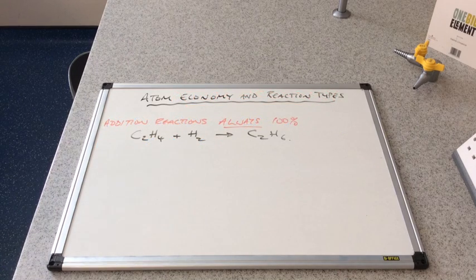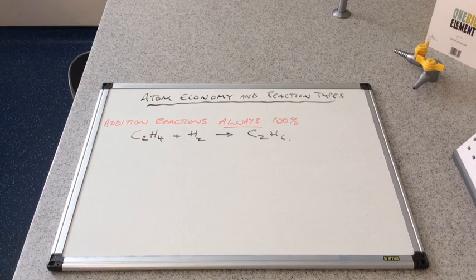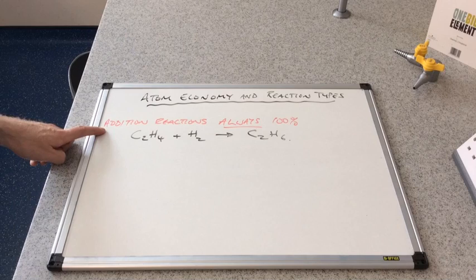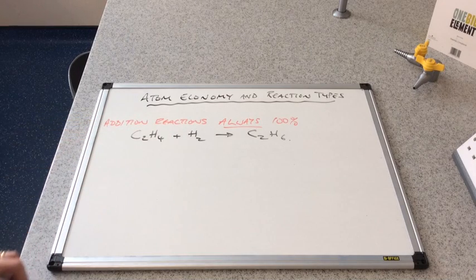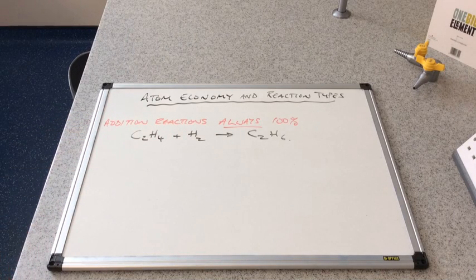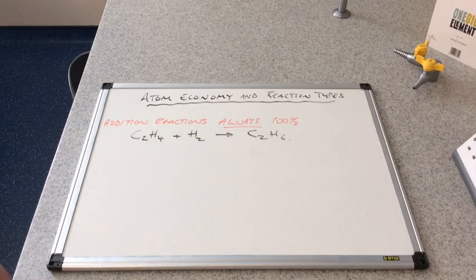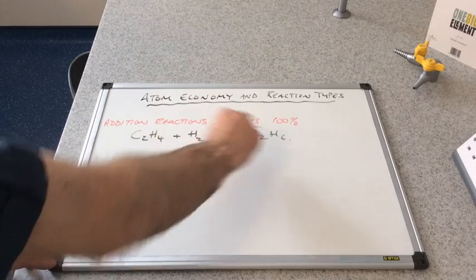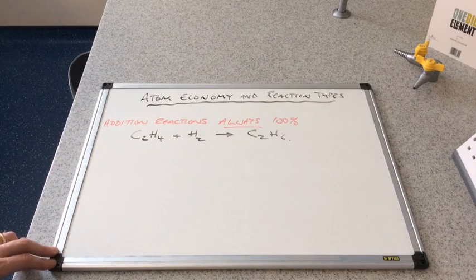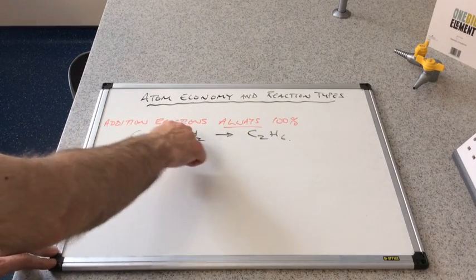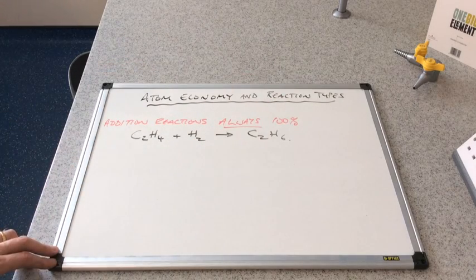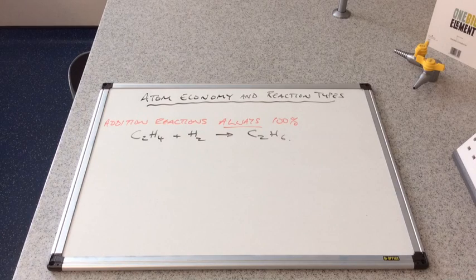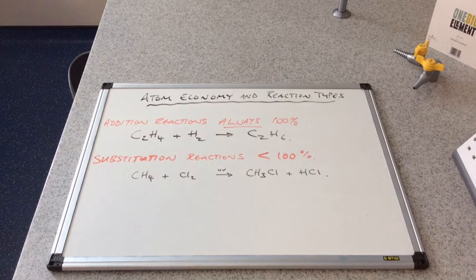So we'll finish the video by looking at atom economy and different types of reactions. The first type of reaction I've got here are addition reactions. Now they would always have an atom economy of 100%. You don't even need to get the calculator out to work that out, because you can see from these 2 reactants becoming 1 product, which is the case in all addition reactions, all of those atoms are in there. So there's no waste products.